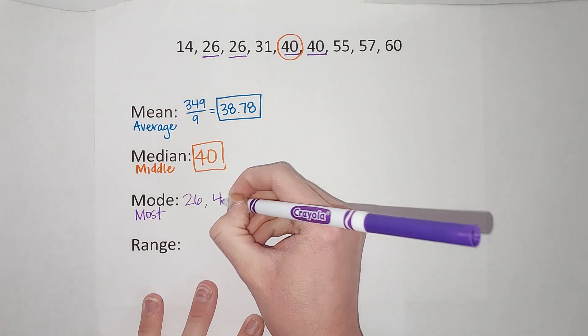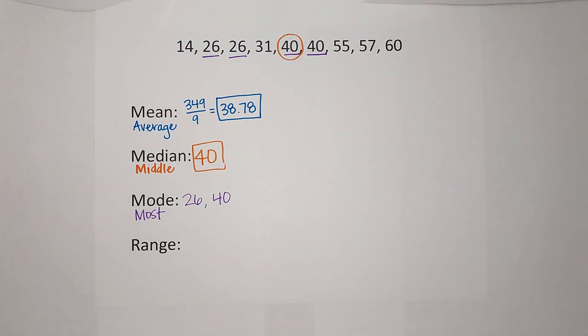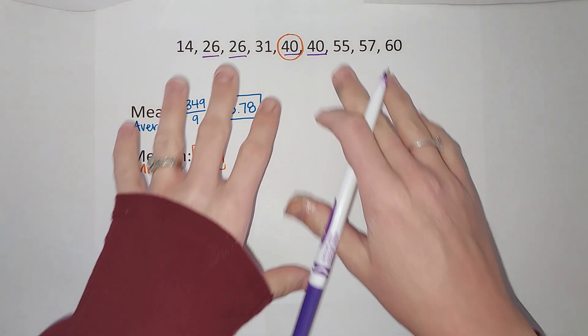So in this case, I have two modes: I have 26 and I have 40. You can have one mode, you can have more than one mode, or you could have no mode.